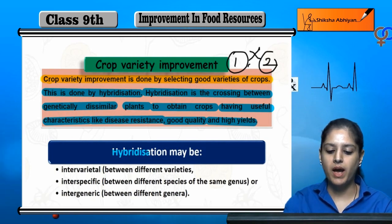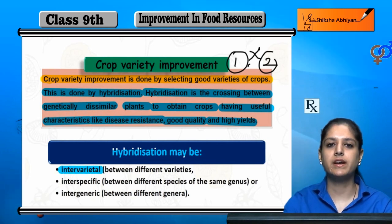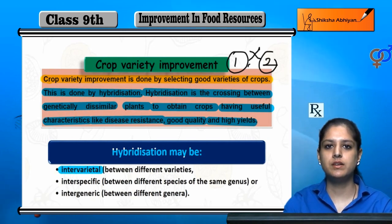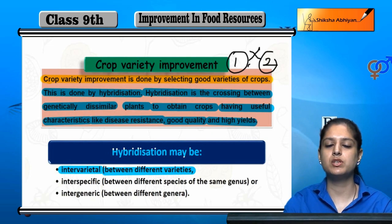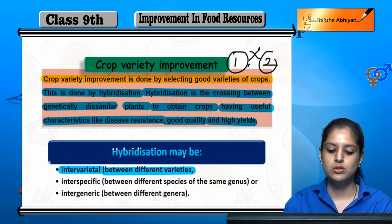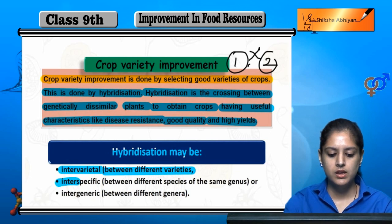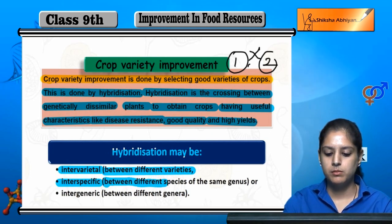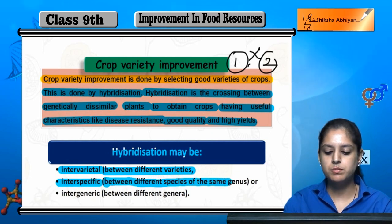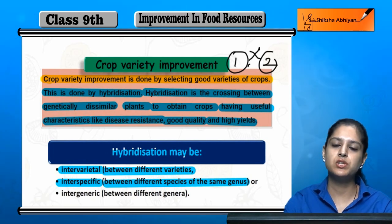Hybridization is also of three types. First is intervarietal, which means crossbreeding between different varieties. Next is interspecific, which means crossbreeding between different species of the same genus.